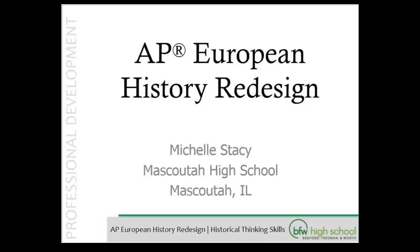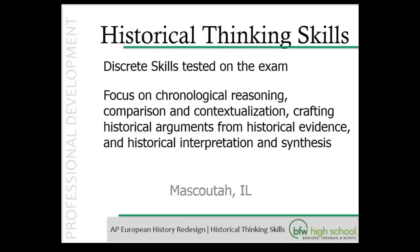We're going to get started and talk first about the historical thinking skills. These are discrete skills tested on the exam in a variety of ways, covered in U.S. History, next year in European History, and then the following year in World History. They focus on things such as chronological reasoning, comparison and contextualization, crafting historical arguments from historical evidence, and using historical interpretation and synthesis. These skills are described further on rubrics we'll look at shortly.